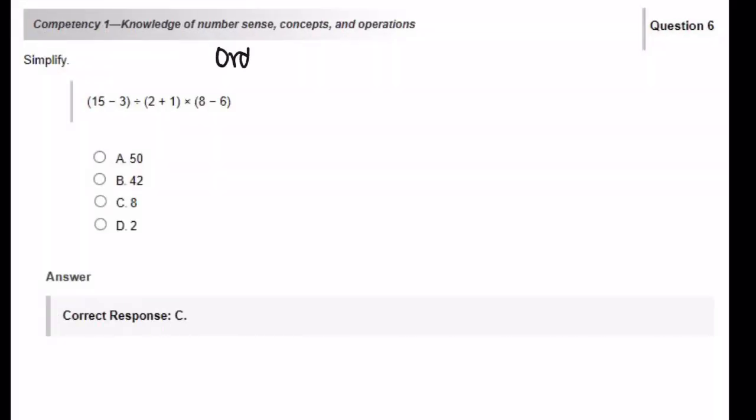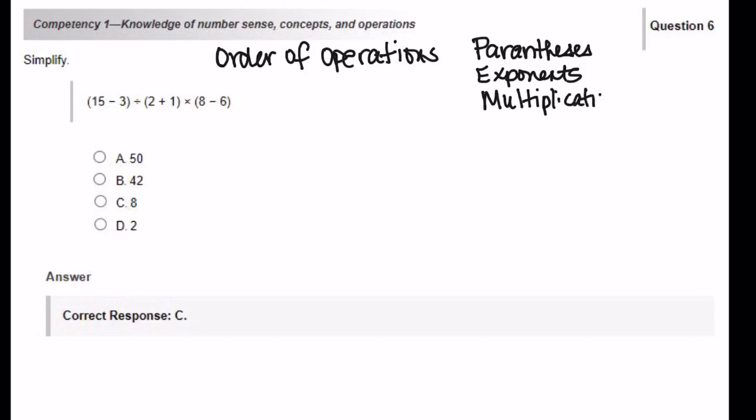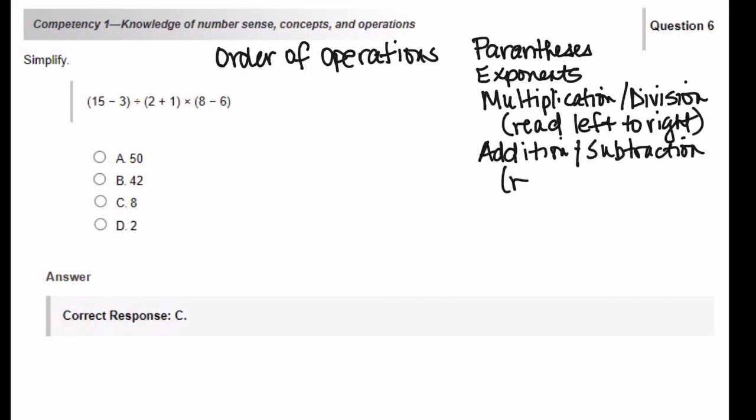Simplify. This is an order of operations problem. So the order is parentheses, then exponents, then multiplication and division. But you read it from left to right. So if you're reading and multiplication comes first, then you do that first. But if division comes first, then you do that first. And then there's addition and subtraction. Same thing. If you read it from left to right, whichever comes first, that's what you do first.